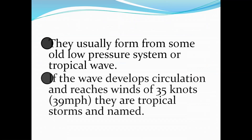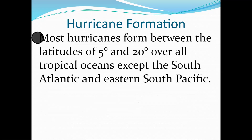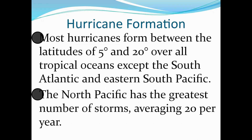Hurricanes normally form from some old low pressure system or a tropical wave. Remember, low pressure typically means lousy weather. If the wave develops circulation and the winds reach a speed of 35 knots or 39 miles per hour, they are considered tropical storms and then they are named. Hurricanes form between five degrees latitude and 20 degrees latitude in all tropical oceans, except for the South Atlantic and the Eastern South Pacific. The North Pacific has the greatest number of storms, averaging 20 per year.